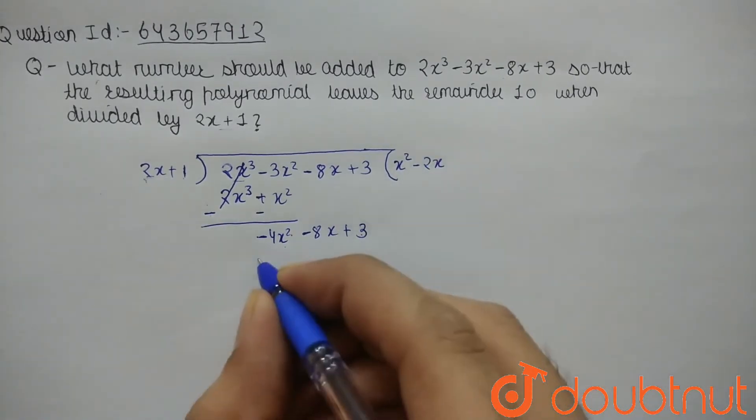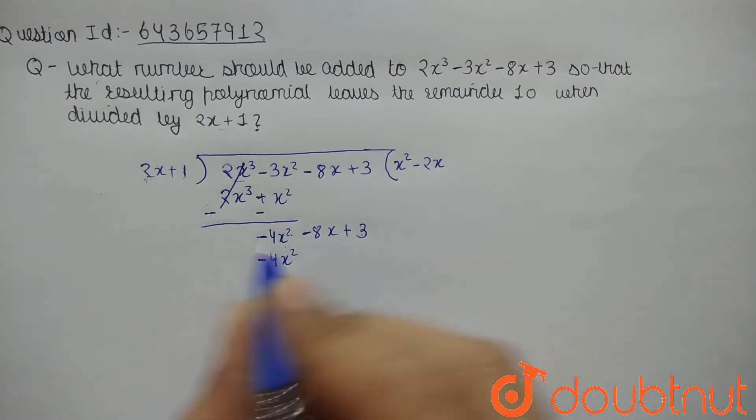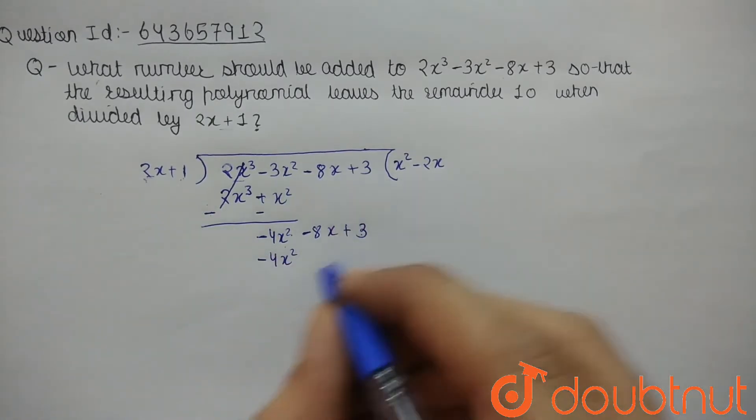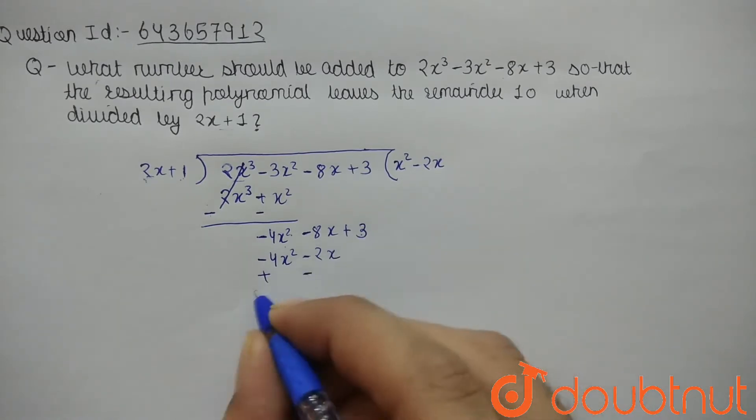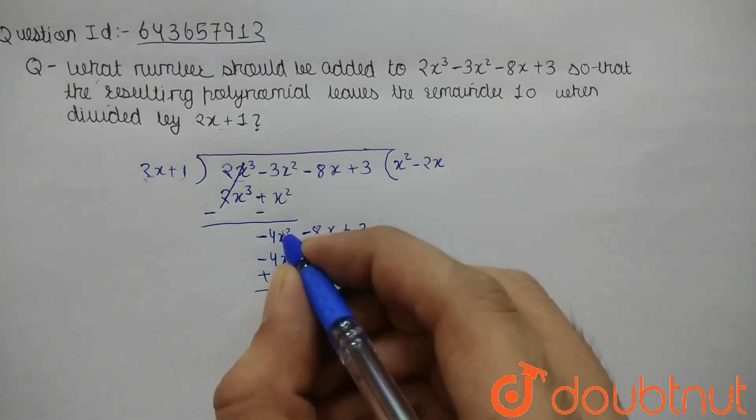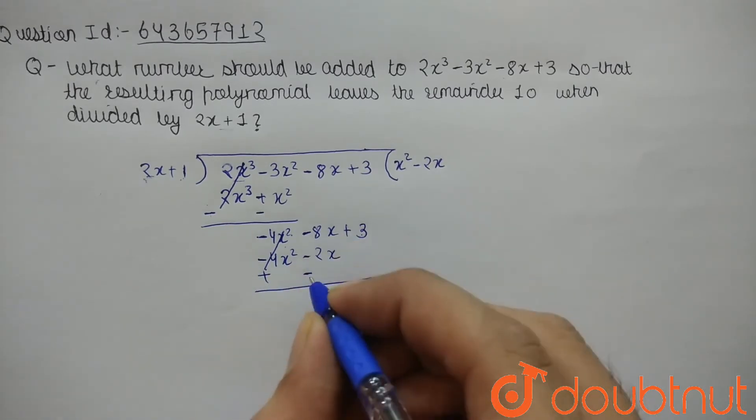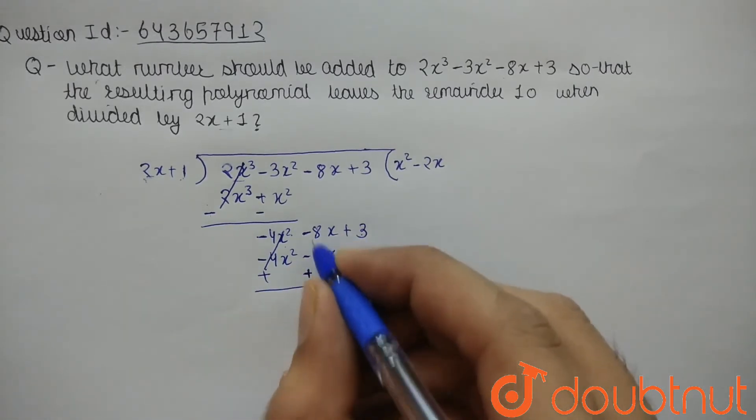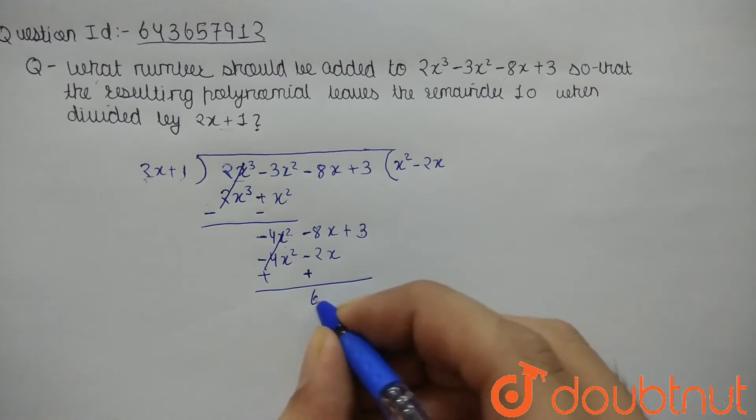-6x, and 1 into -3 is -3. So now sign will be changed, plus plus, cancelled out. So our remainder is coming as 6, but what we need to prove is remainder should be 10.